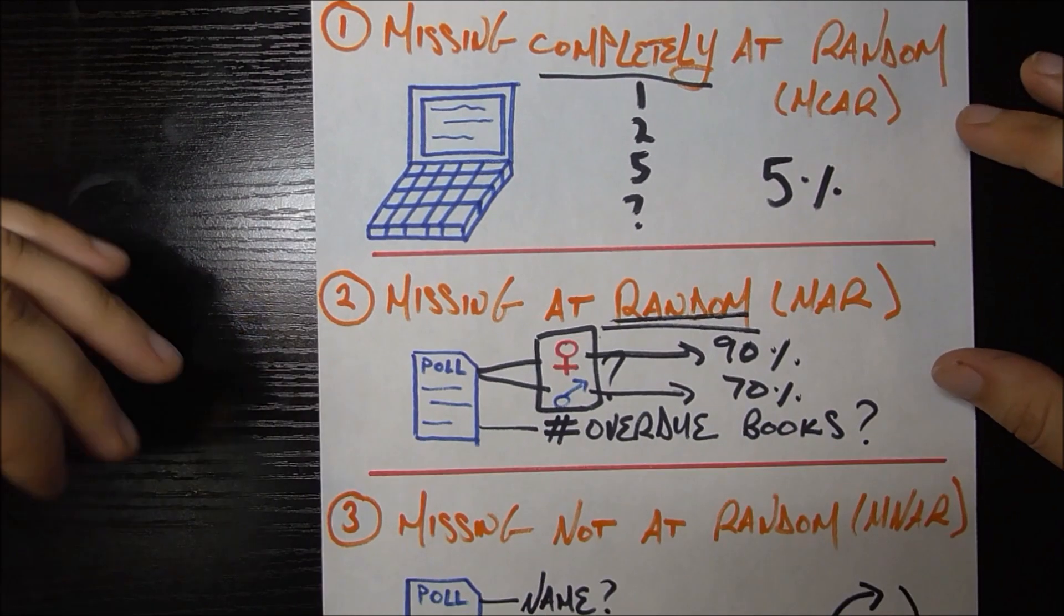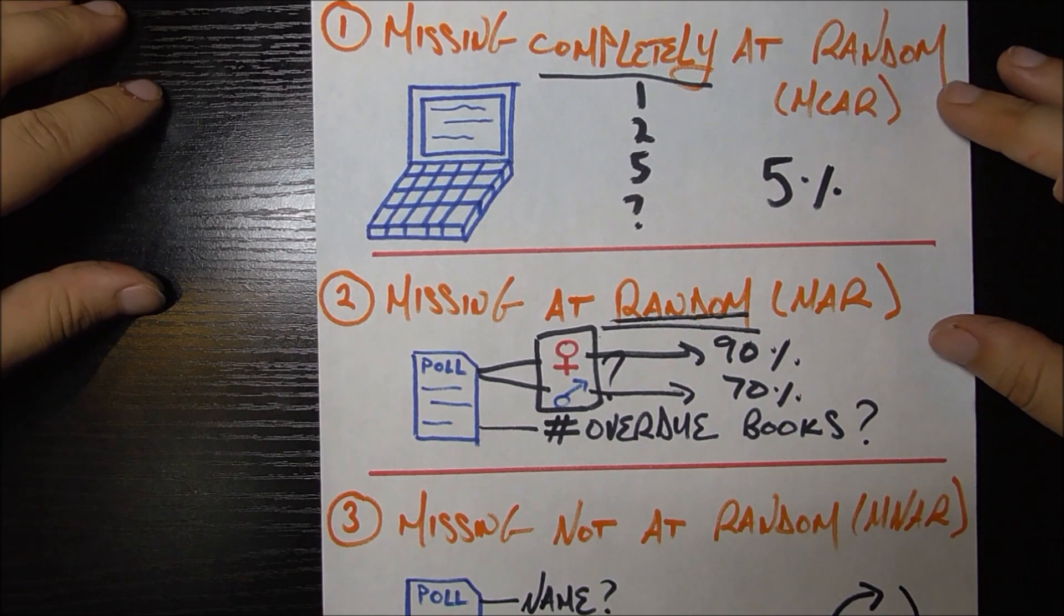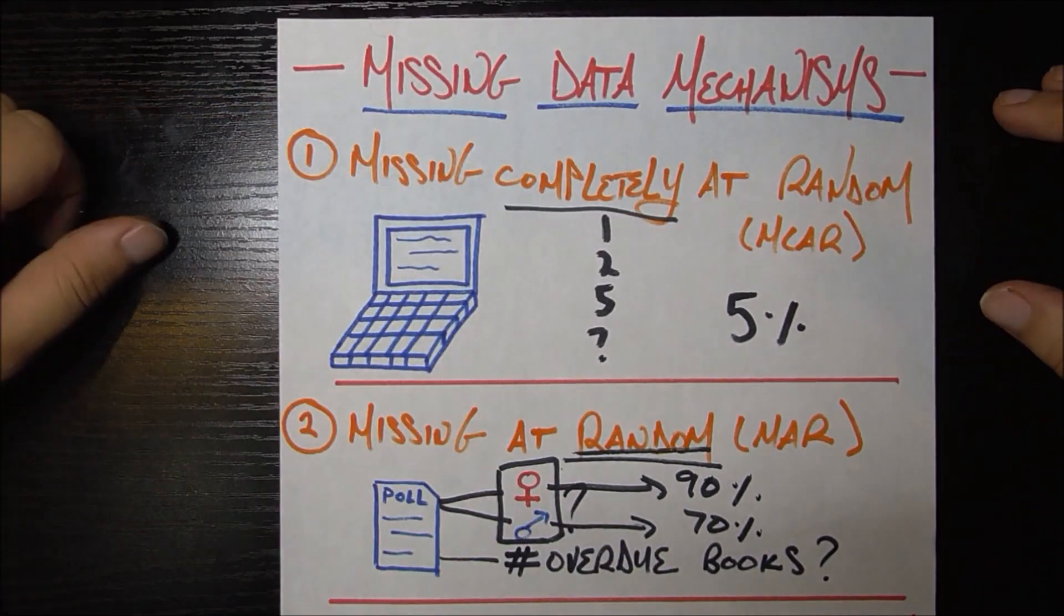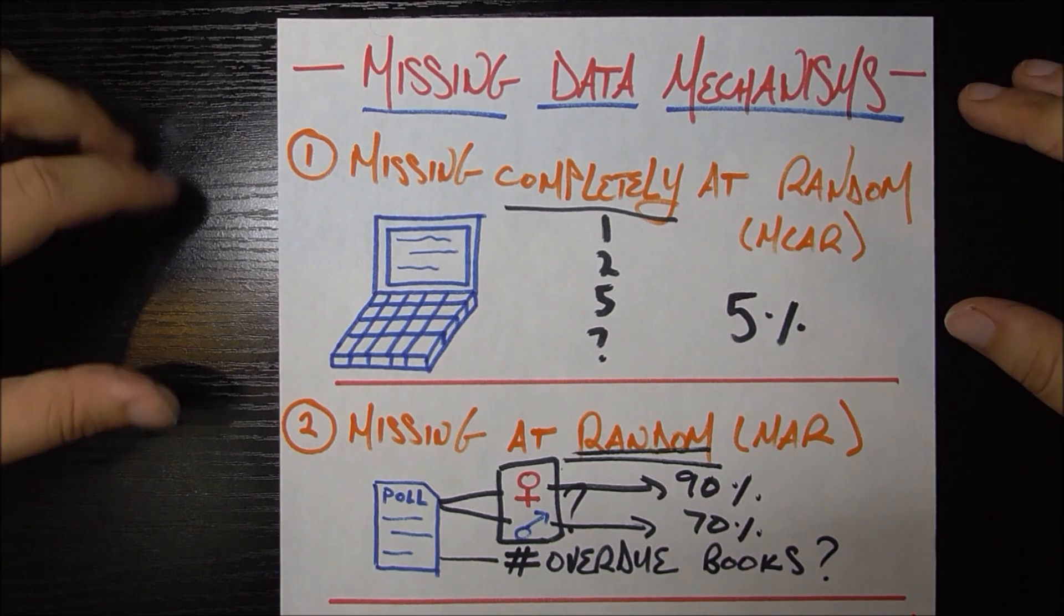And that's it. That's the survey of the top three missing data mechanisms in data science. And it's important to know these mechanisms going forward when we look at how to deal with missing data.